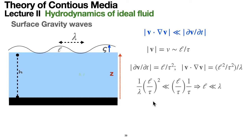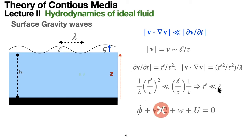We drop the nonlinear velocity term and use the Euler equation. Because the fluid is incompressible and the flow is potential, we can write the equation using a velocity potential phi. The velocity-squared term we drop by our approximation. What remains is the thermodynamic function w — enthalpy or chemical potential — and the potential of external forces.